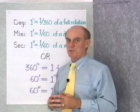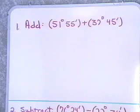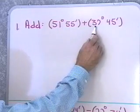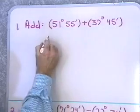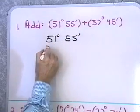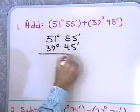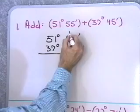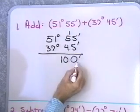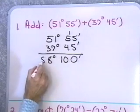I want to go to the board now and work a couple of problems involving degrees and minutes, and also decimal degrees. For problem number 1, we want to add 51 degrees 55 minutes and 37 degrees 45 minutes. I'll line them up vertically as if doing a regular addition problem. Adding the minutes: 5 and 5 is 10, carry the 1, then 5, 6, and 4 is 10, so I get 100 minutes.